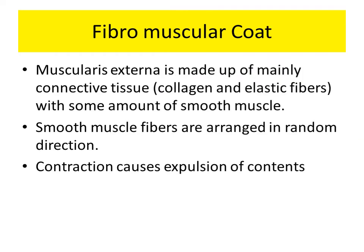The muscularis externa is mainly made up of connective tissue — mainly collagen and elastic fibers — with some amount of smooth muscle. Hence, this layer could rather be called the fibromuscular coat. The smooth muscle fibers are arranged randomly in different directions, and their contraction causes expulsion of the contents, that is, the bile.